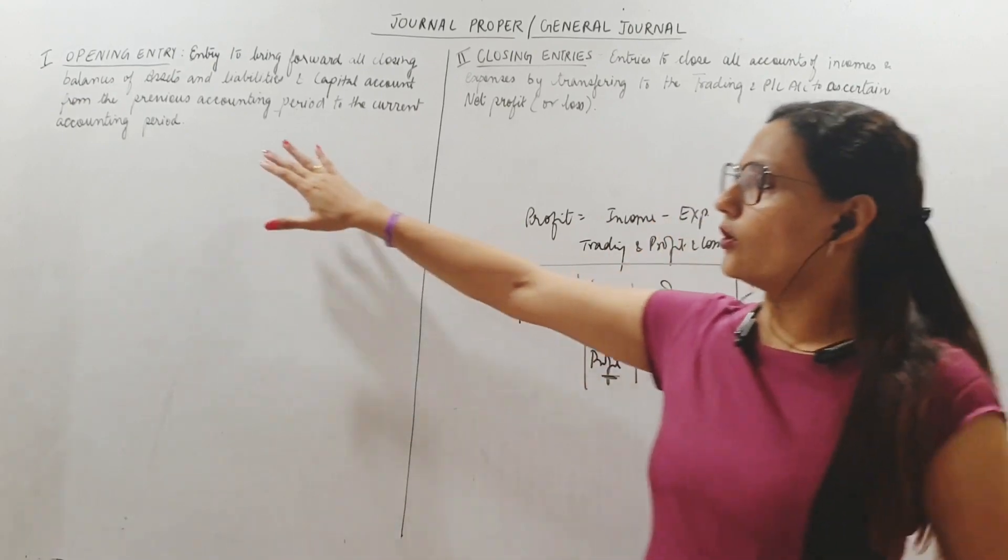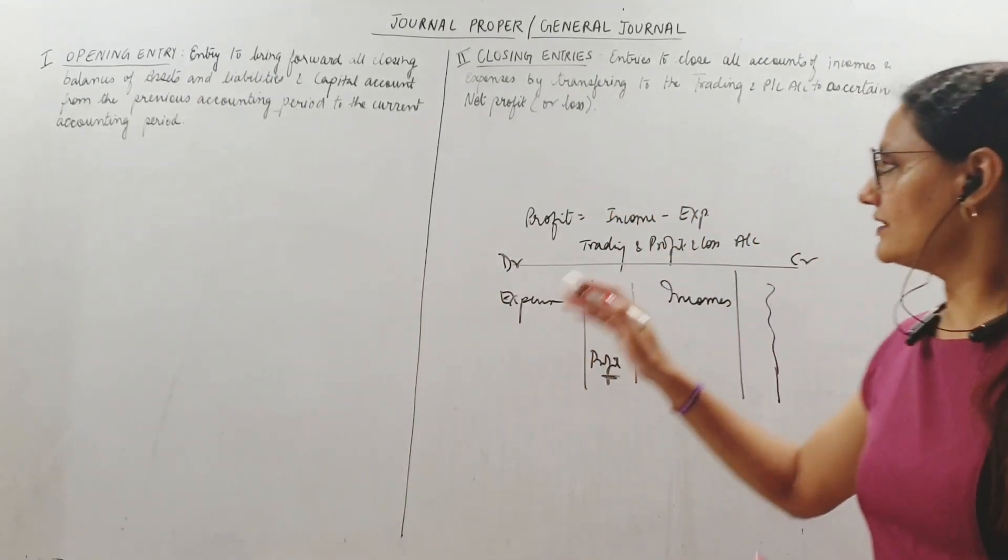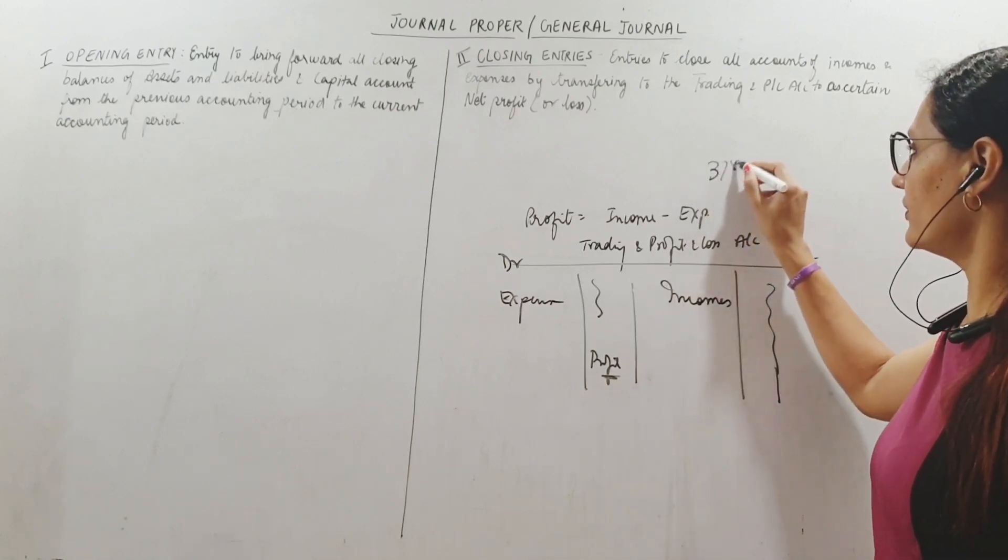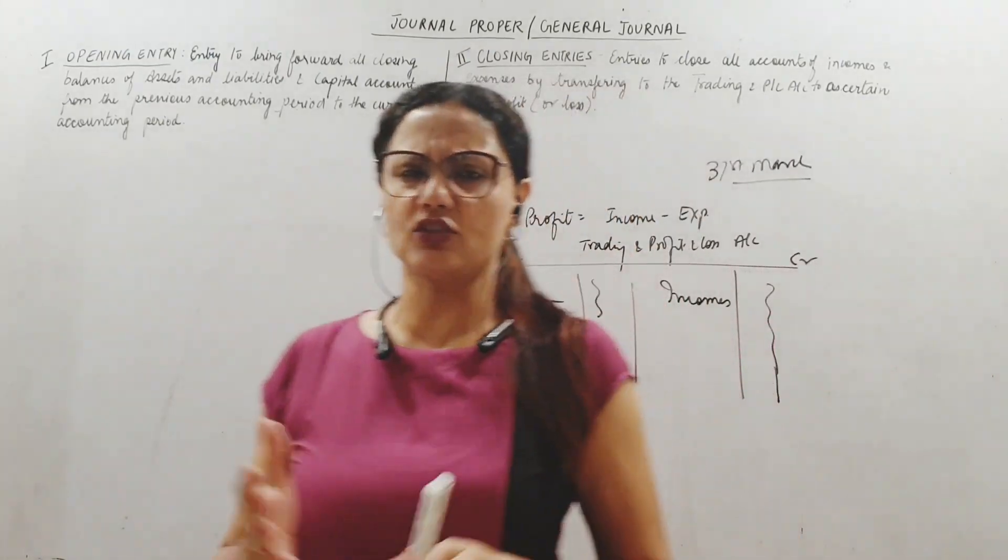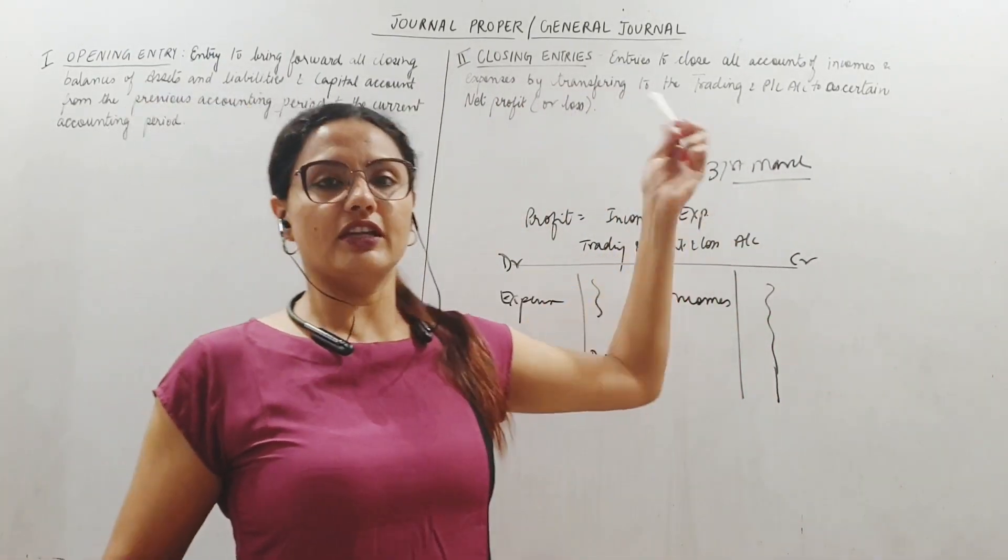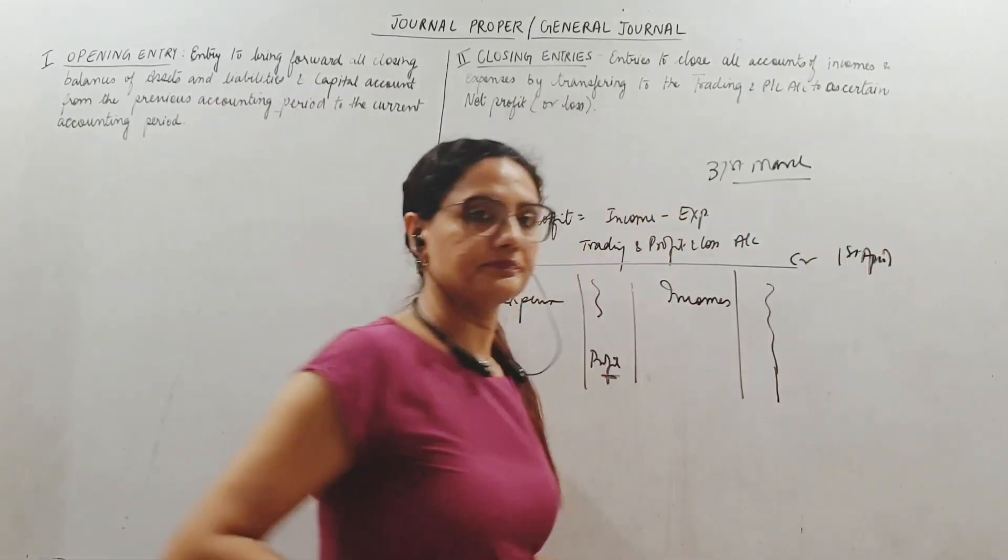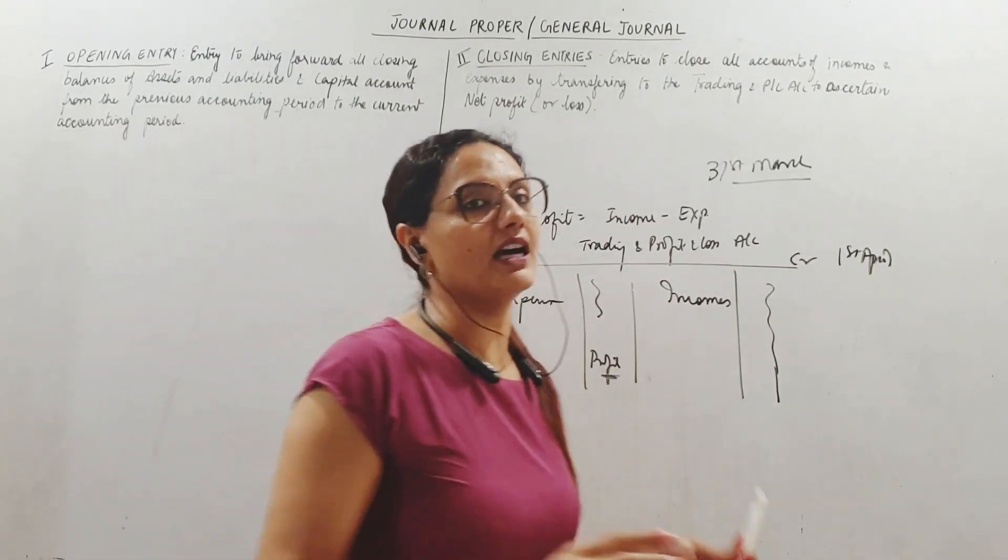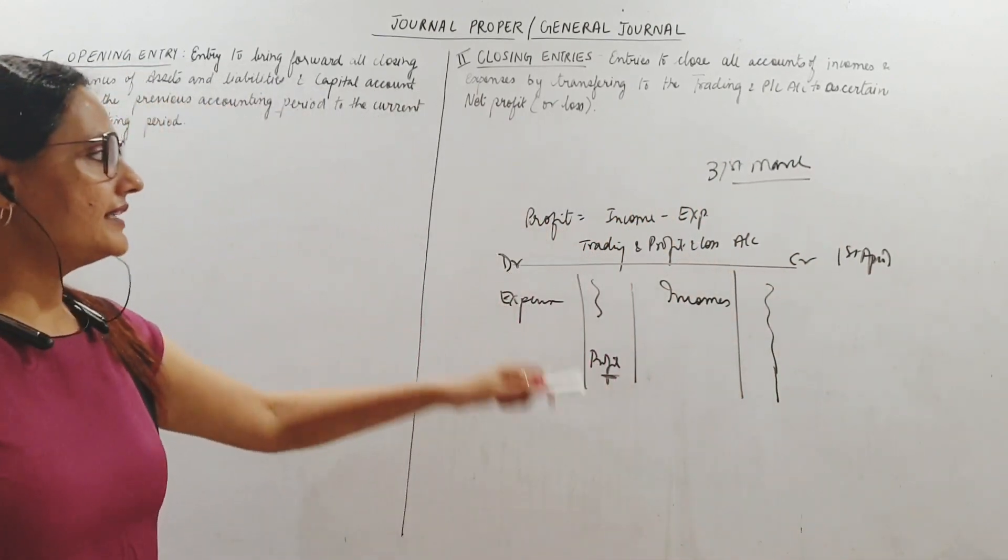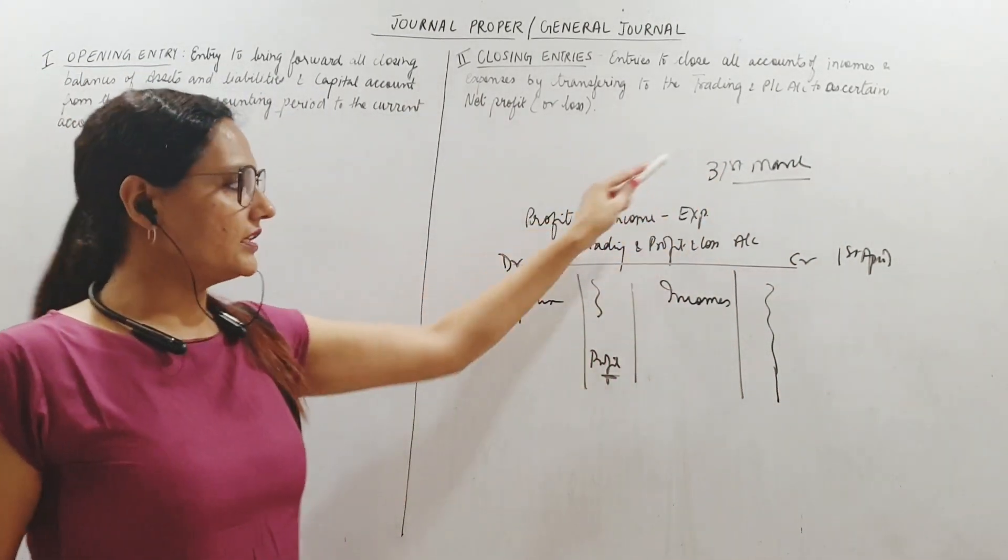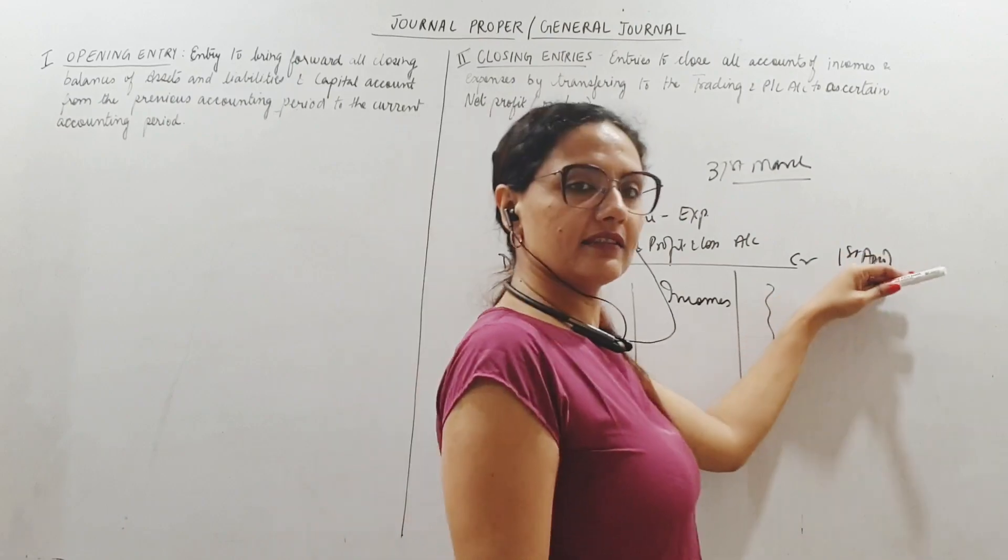So for that, opening entry we need to pass at the beginning of each year. At the end of each year ending on 31st March, all businesses wrap up their books of account and find out profit and loss. Every year ends on 31st March. Therefore the year starts on 1st April. So 1st April to 31st March is the accounting period, accounting year.